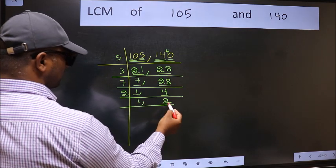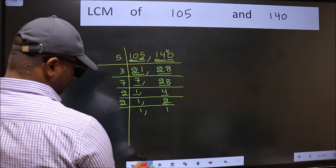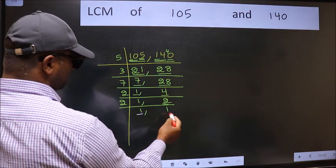Now here we have 2. 2 is a prime number, so 2 times 1 is 2. So we got 1 in both the places.